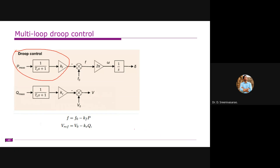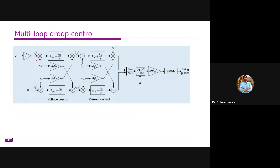Since we are not including droop control, f₀ equals the nominal frequency of 50 Hz and V₀ equals the nominal voltage of 230 volts. We multiply f₀ by 2π to get omega, then integrate omega to obtain the phase angle delta. Similarly, V₀ equals V, so no magnitude droop adjustment is needed.